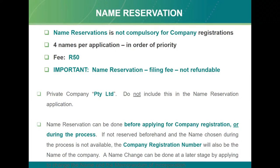Electronic name reservation costs 50 rand. You can submit up to four names, but it's important to put them in order of priority - your first preferred name must be on line one. The 50 rand is a filing fee and is not refundable, so we always advise putting more than one name in order of priority. If your first name is not available and that's the only name provided and it is rejected, the 50 rand will still be deducted.